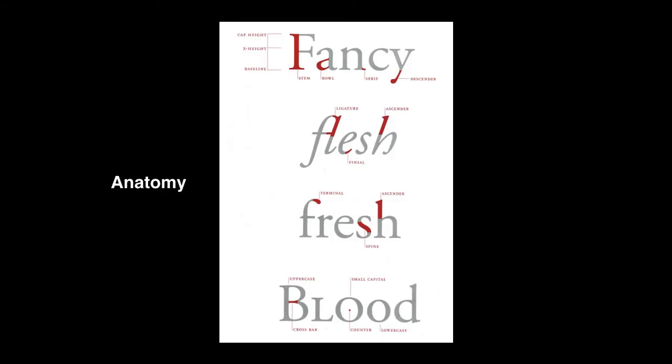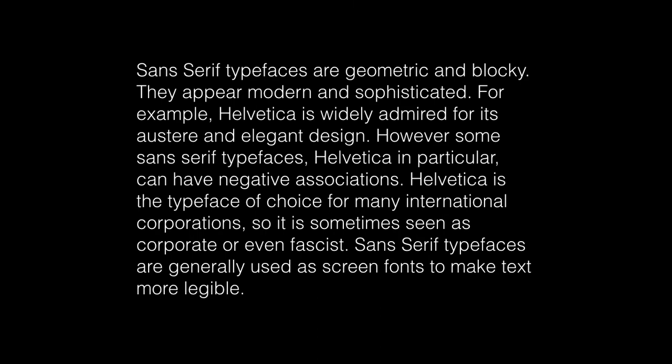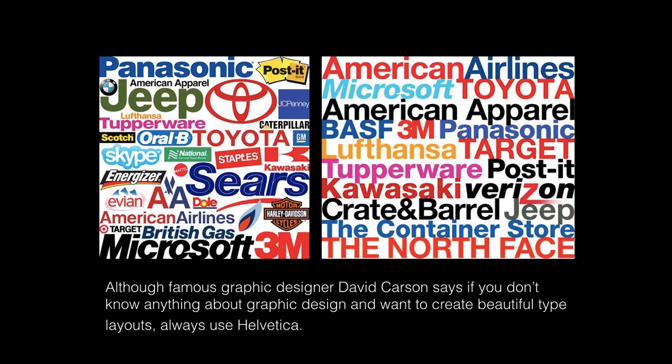There's an anatomy of type — ligatures, ascenders, descenders — that you'll go over in Graphic Design 1. Two basic kinds of type are sans serif and serif. Sans serif fonts are geometric and blocky; Helvetica is a great example and kind of always looks good. Sans serif can appear corporate, very strong, even fascist, and is generally used as a screen font because the text is more legible. Here's an example of Helvetica used in many different corporate logos and branding. As David Carson says, if you don't know anything about graphic design and want to create a beautiful layout, just use Helvetica — I agree with that.